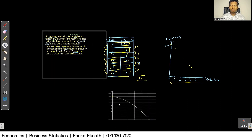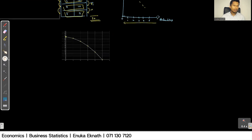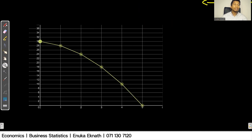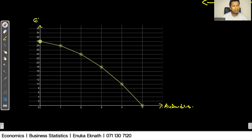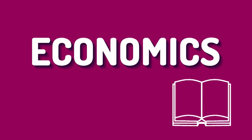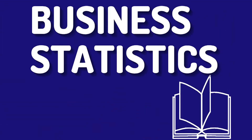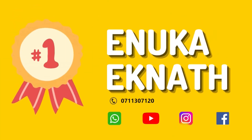This is the answer for the question. The x-axis represents automobiles and the other axis represents electronics. This is the correct PPC for the question. I hope you all understood this really well, and we will meet again with another interesting question. Learn economics and business statistics with Enoka Eggnath.